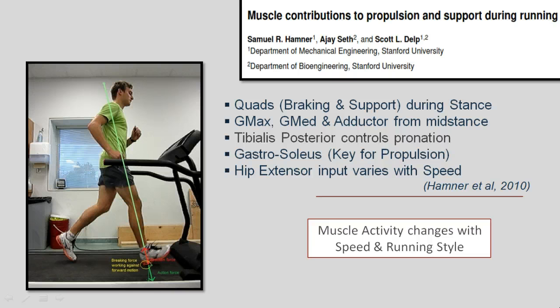Most of the power for propulsion comes from the gastrocnemius and soleus. The hip extensors are quite interesting — their contribution varies with speed; the faster you run, the more input from the hip extensors. Muscle activity can change within the same individual depending on speed and running style, so if you change your shoes or your style of running, it's highly likely that your muscle activation patterns will also be different.